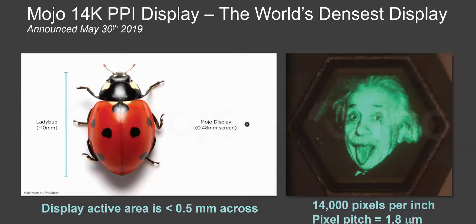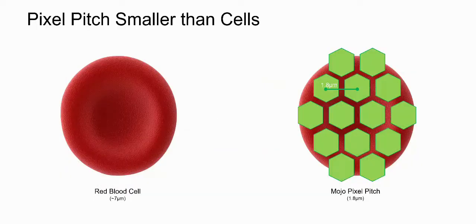And the pixels are 1.8 microns apart. So when we think about what that means, we can compare it to a red blood cell. Human red blood cells are seven microns across, which means that 14 Mojo display pixels would fit on that one red blood cell. So this just gives you an idea of the scale.